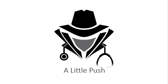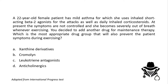Hello everyone and welcome. Let's take a new question. A 22-year-old female patient has mild asthma, for which she uses inhaled short-acting beta-2 agonist for attacks as well as daily inhaled corticosteroids. At present, her symptoms are not controlled and she becomes severely out of breath whenever exercising. We decided to add another drug for maintenance therapy — which is the most appropriate drug group that will also prevent the patient's symptoms during exercising?